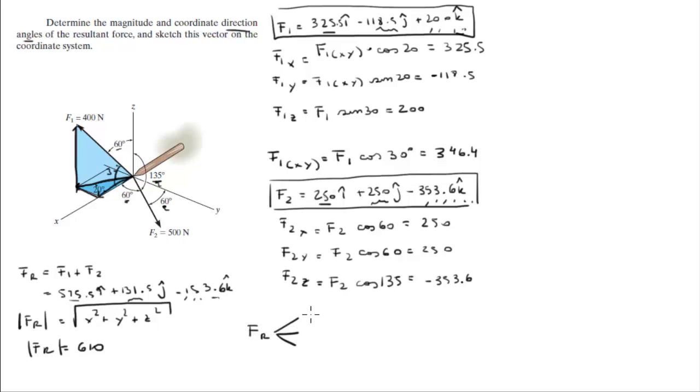And to find the coordinate direction angles, you do the cosine inverse of the X component over FR, cosine inverse of the Y component over FR, and cosine inverse of the Z component over FR. This is the X, this is the Y, this is the Z. FR is the magnitude which is this, and the values are 19.4 degrees, 77.6 degrees, and 104.6 degrees.